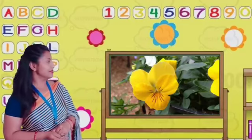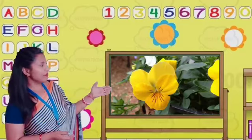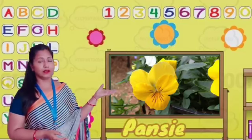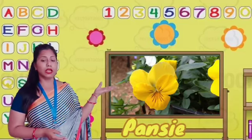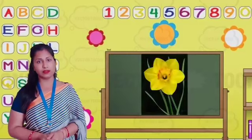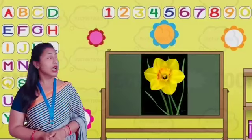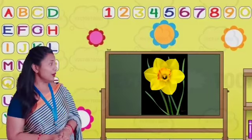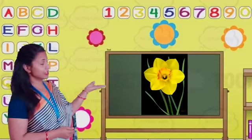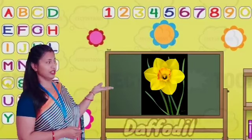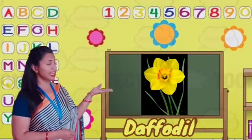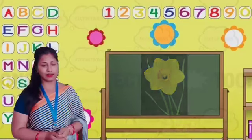This is the picture of pansy. It is yellow in color. Now see, this is the picture of daffodil. And it is also yellow in color.